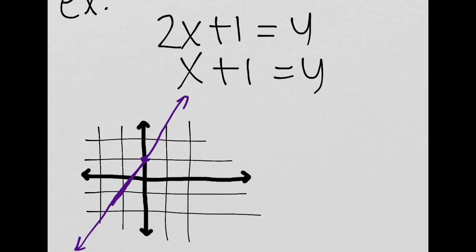And then x plus 1 would look like this. This is not to scale, but it gives us a picture. This is the intersection point, which is 0, 1.